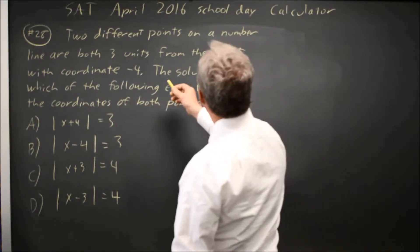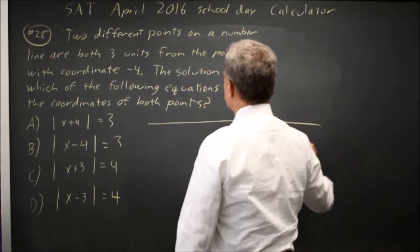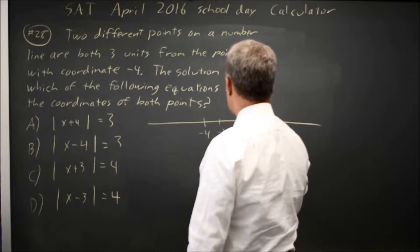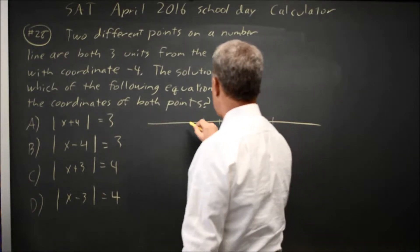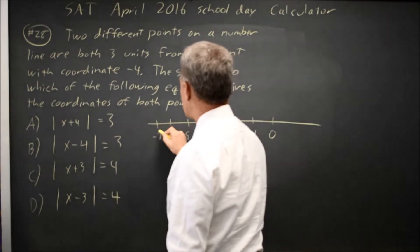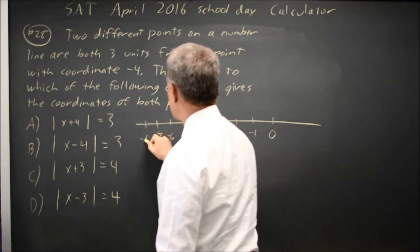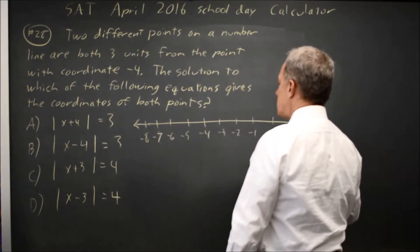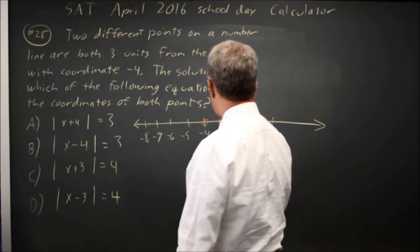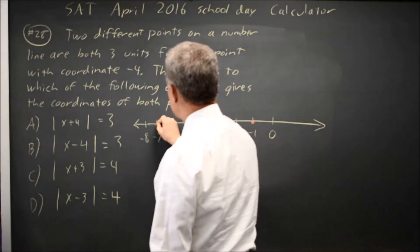So the points on the number line are both three units from the point with coordinate negative 4. So we want to be three units from negative 4, which would be 3 up is negative 1 and 3 down is negative 7.